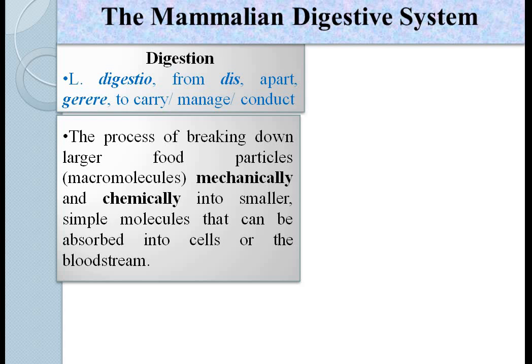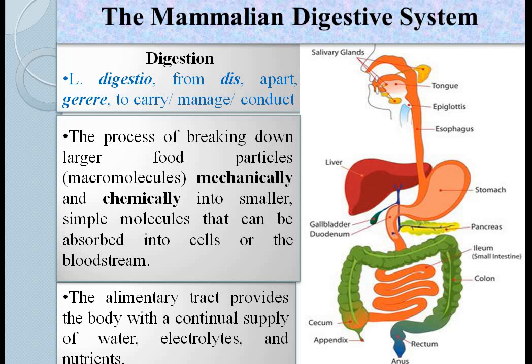The food that we intake is not in usable form, but at the end of digestion it is converted into simple molecules. These simple molecules can be readily absorbed into the bloodstream and supplied to the cells to carry out their functions. Digestion occurs in the alimentary tract, which provides the body with a continual supply of water, electrolytes and nutrients.